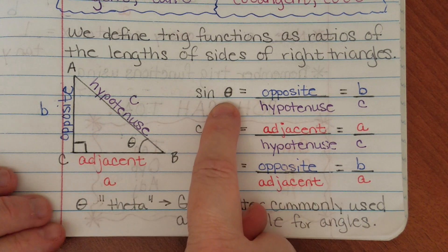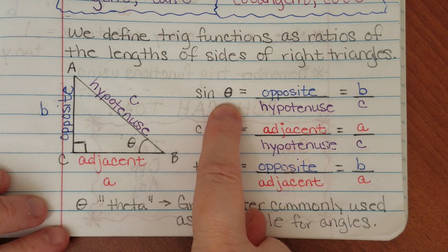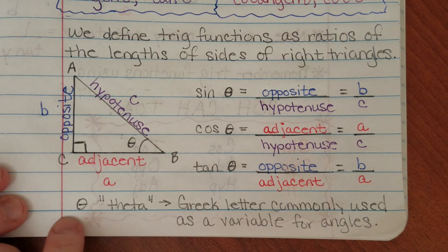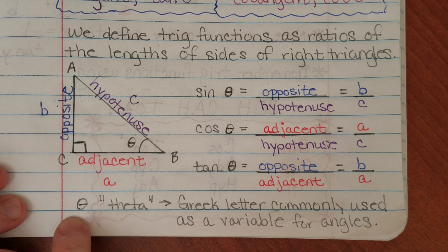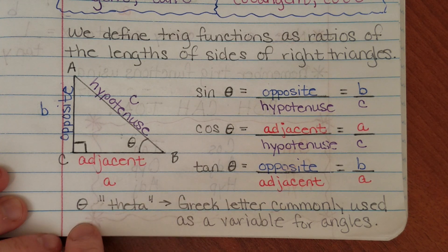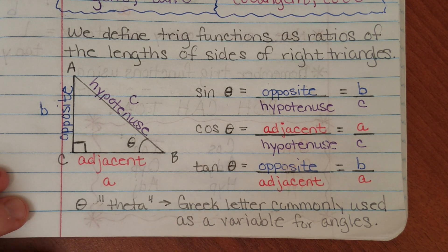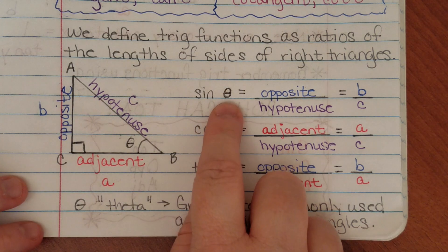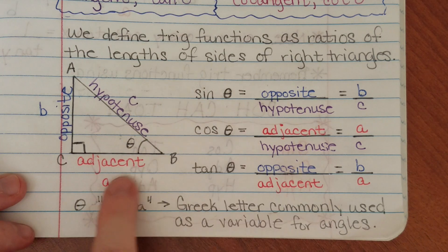So if this is my angle theta — and remember, theta is just a Greek letter that we use as a variable for angles. It's pronounced theta. That's a common variable you'll see. You'll also see x, y, z, and all the other letters of the alphabet. So this is just a variable that represents the angle measure.